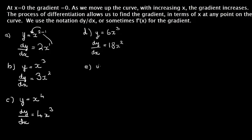For e, y equals minus 4x to the power of 4. As before, bring the 4 down, multiply it by the minus 4, and we get minus 16x to the power of 4 minus 1 is 3. So minus 16x cubed.